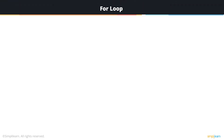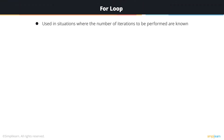Let's go into detail about the for loop. For loops are used in situations where the number of iterations required to be performed are known. The for loop uses a single statement which involves components that may span multiple statements in other looping methods.